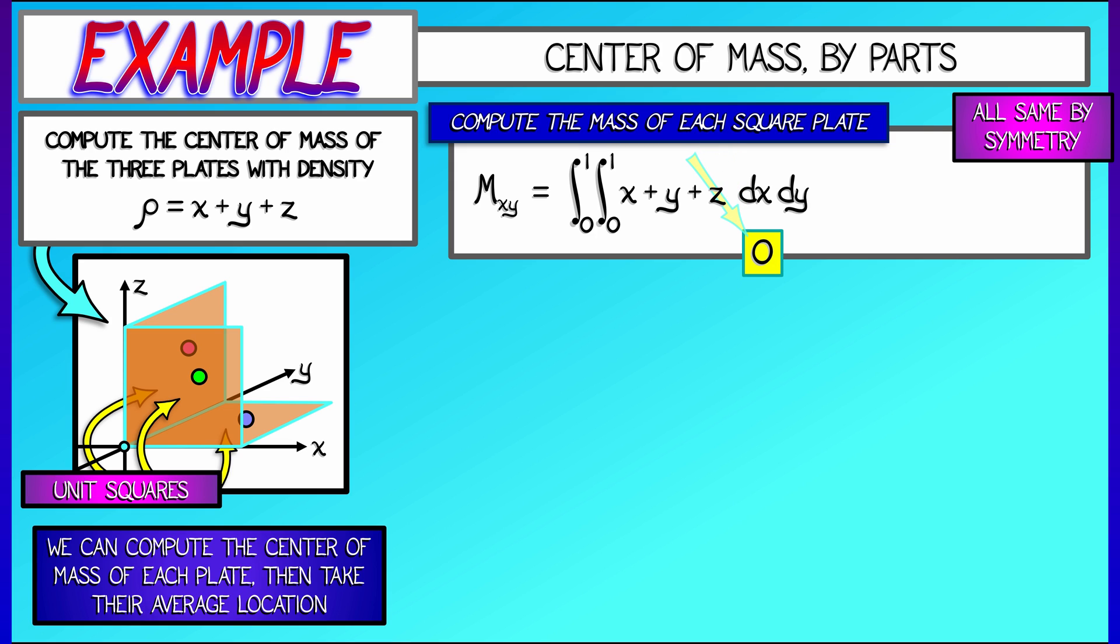Now of course, we can get rid of the z because in the xy-plane, z is equal to zero. I integrate x plus y, that's x squared over 2 times y plus y squared over 2 times x, zero to one, that's one half plus one half, that's one.